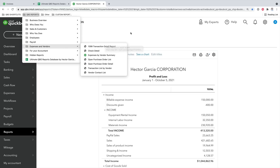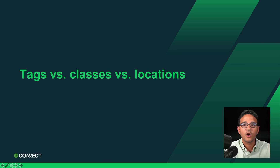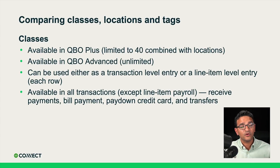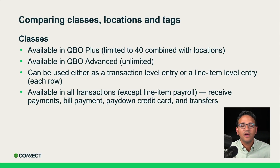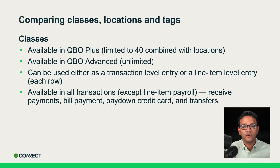I strongly recommend trying this to speed up your workflow. Let's move on to tags, classes, and locations. We'll start with classes, which is the most powerful dimension feature in QuickBooks Online for building custom reports. Classes are available in Plus and Advanced — in Plus they're limited to 40 combined with locations, and in Advanced you have unlimited classes.